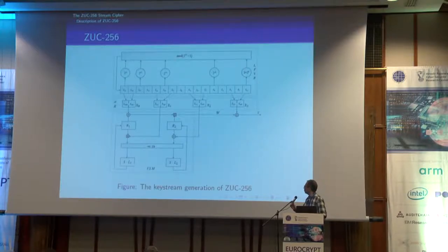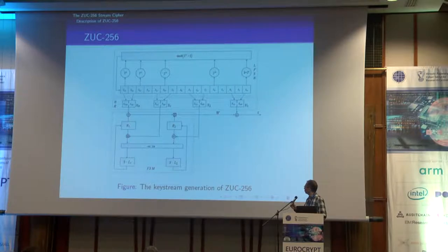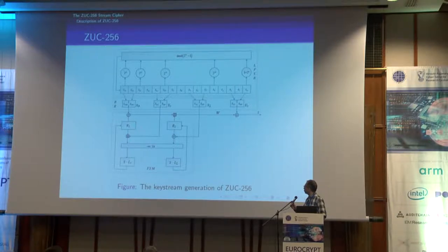This is the structure of the cipher. The upper part is a linear feedback shift register defined over 2 to the power of 31 minus 1, where each cell consists of a 61-bit word. The middle layer is a bit reorganization that extracts contents from the LFSR and forms four 32-bit words: X0, X1, X2, and X3.